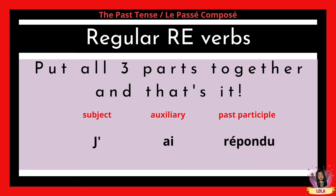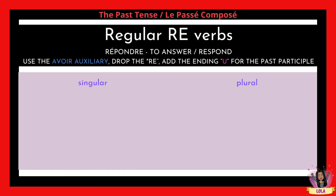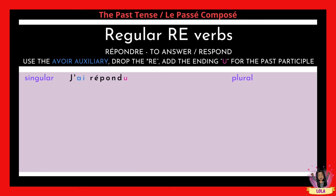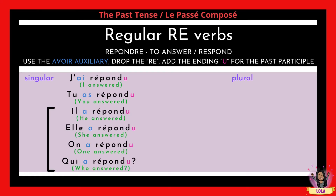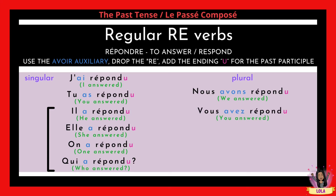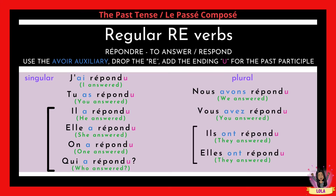Put all three parts together — subject, auxiliary, and past participle — and you have the passé composé. J'ai répondu means I answered. Tu as répondu: you answered. Il a répondu: he answered. Elle a répondu: she answered. On a répondu: one answered. Qui a répondu: who answered. Nous avons répondu: we answered. Vous avez répondu: you answered. Ils ont répondu: they answered. Elles ont répondu: they answered.